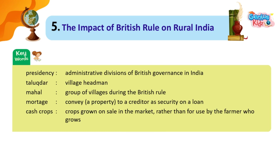Keywords: Presidency — Administrative divisions of British governance in India. Talukdar — Village headman. Mahal — Group of villages during British rule. Mortgage — Conveying a property to a creditor as security on a loan. Cash crops — Crops grown for sale in the market rather than for use by the farmer who grows them.